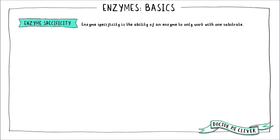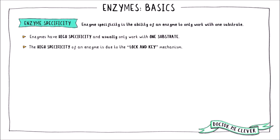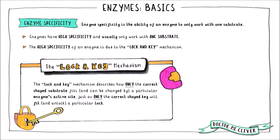Enzyme specificity is the ability of an enzyme to bind to and change one type of substrate. Enzymes have high specificity for their substrates — they can only catalyse one reaction. The lock and key mechanism is responsible for an enzyme's high specificity. This mechanism describes how only one type of substrate can fit into the active site of an enzyme. Only one substrate fits because a substrate fits its enzyme like a key fits a lock: only the correct shaped key can open a particular lock, just as only the correct shaped substrate can be changed by a particular enzyme. We liken the key to the substrate and the lock to the enzyme's active site.